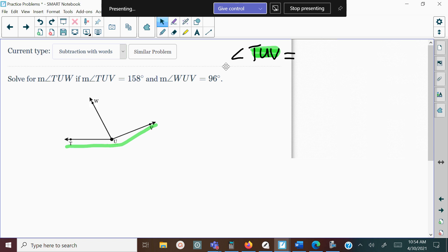TUV. And it's equal to the two smaller angles: WUV plus TUW. Once you get it written out, then you don't have to worry about whether you add or subtract, you just plug them in. So we're going to plug in. Do we have a measurement for TUV? Yes, it's 158.